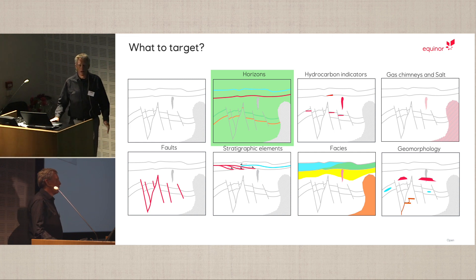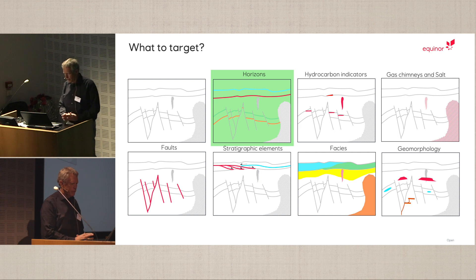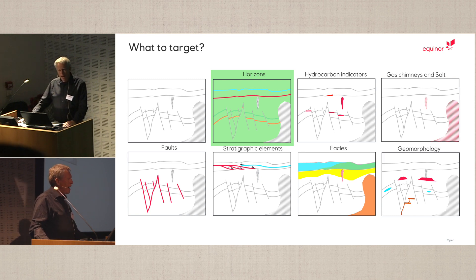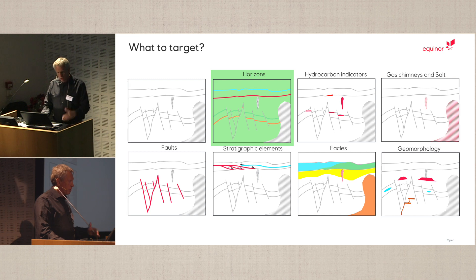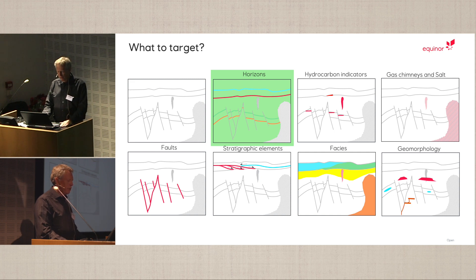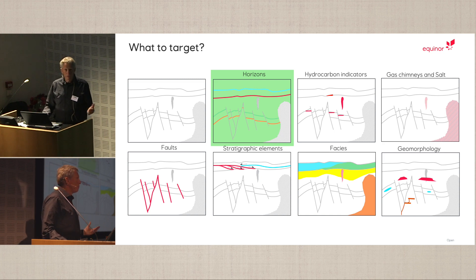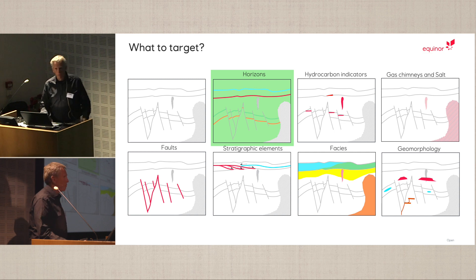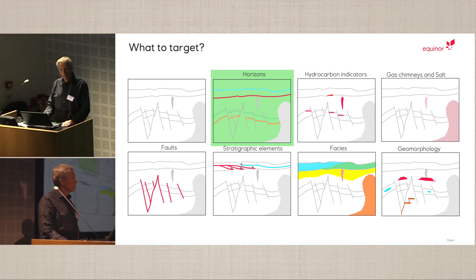Rewinding three to four years, we asked ourselves what we should target. We saw groundbreaking deep learning results in many different fields and wondered how to apply them within seismic interpretation. We could go for faults, horizons, stratigraphic elements, DHIs, facies like gas chimneys and salt, or geobodies and geomorphology. We decided to go for the horizons — it's the high-hanging fruit, difficult to pick, but it tastes a lot sweeter.